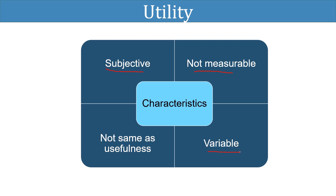Utility is variable. It is not an absolute but a relative concept because of its subjective nature. It is relative to a person's need. The utility of a commodity to a person depends on his intensity of desire for that commodity — the greater the need, the greater the utility. Therefore utility varies from person to person, place to place, and from time to time.